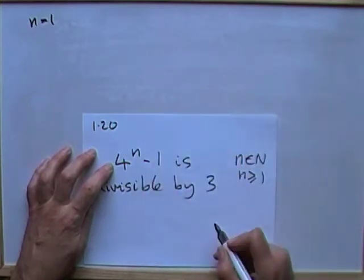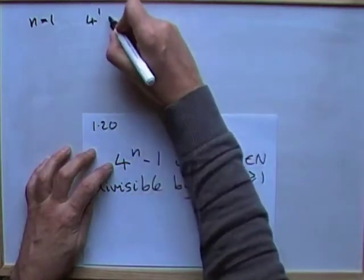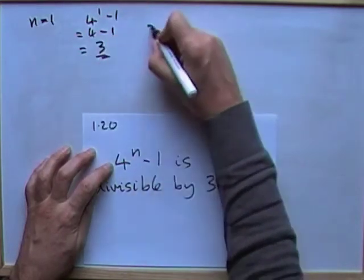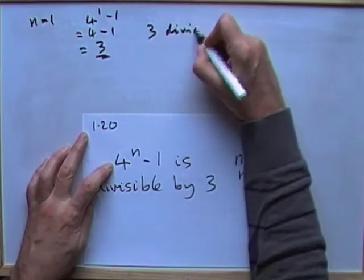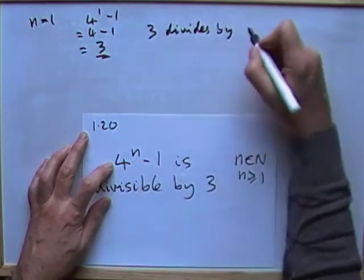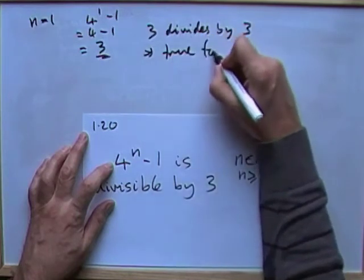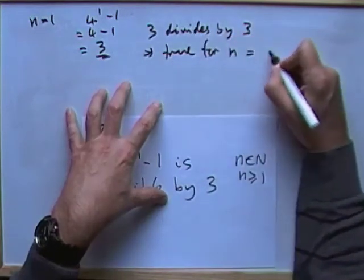So 4 to the n minus 1 would mean 4 to the power of 1 minus 1. That's 4 minus 1. That's 3. 3 divides by 3, which means it's true for n equals 1.